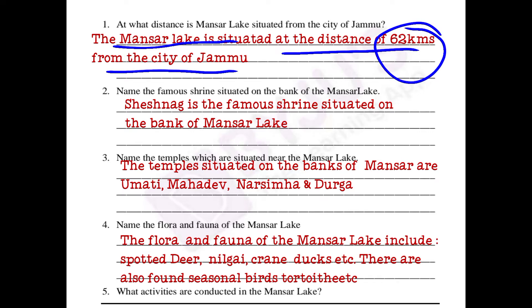Question number 2 is: name the famous shrine situated on the bank of the Mansur Lag. If you remember, on the eastern bank of the Mansur Lag, there is a famous shrine of Shishnag. Shishnag is a mythological snake having six heads. So, Shishnag is the famous shrine situated on the eastern bank of the Mansur Lag. Note this down.